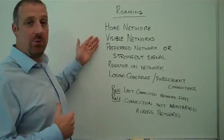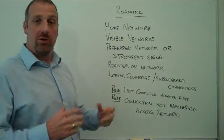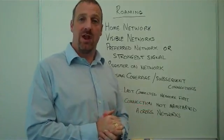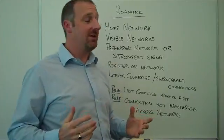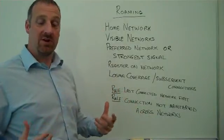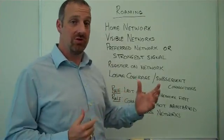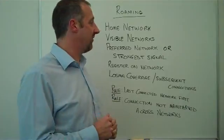The first thing the module will do is look and get a list of all the visible networks that it can see. It will order that list based upon signal strength — strongest first, weakest last.